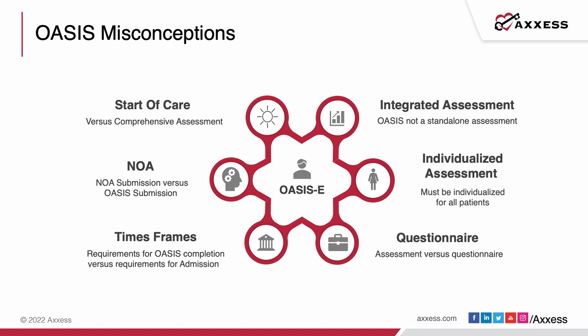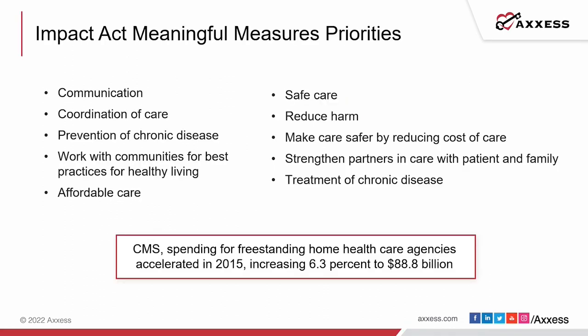The new training manual has excellent ideas on how to complete those assessments and gives tools to work with — as opposed to using OASIS as a questionnaire. The IMPACT Act and Meaningful Measure priorities from that 2014 change are focused on communication with the patient, coordination of care, and making sure we have a solid assessment both up front and at discharge. They feel that with an adequate assessment we can help prevent chronic diseases through teaching, work with communities for healthy living best practices, and encourage patients to take more responsibility for their health.